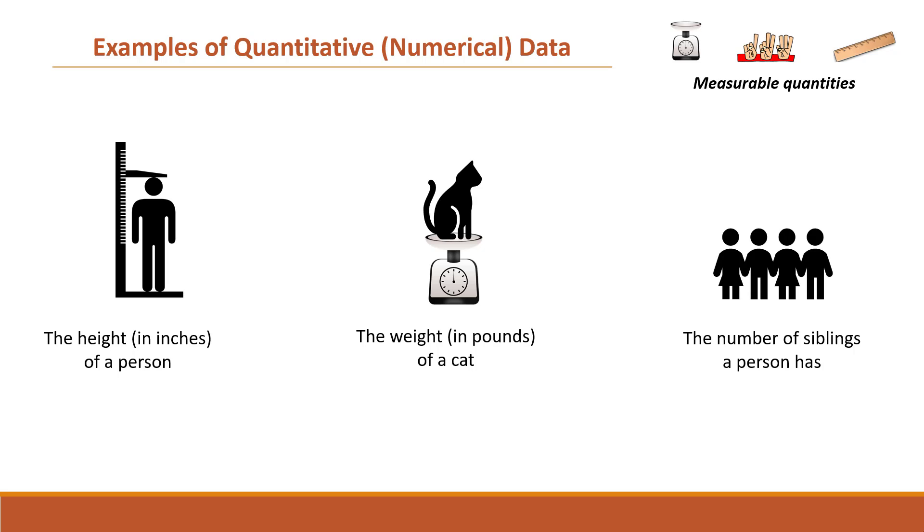And the last example is the number of siblings a person has. This represents quantitative data because the number of siblings can be used to measure a family size. So these are some examples of quantitative or numerical data. Quantitative or numerical data are always expressed by numbers and have accompanying units of measure: inches, pounds, dollars that are important to note.